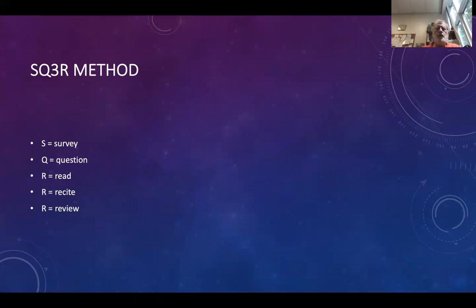There's the SQ3R method as well, which I think would work really well. Where the S stands for survey, so you look over the part you're going to read first, looking at subheadings and headings and figures and so forth, and from that develop some questions, either in your mind or write them down, and then read the material, try and recite the material, and review the material. So that's what the three R's are: read, recite, and review.